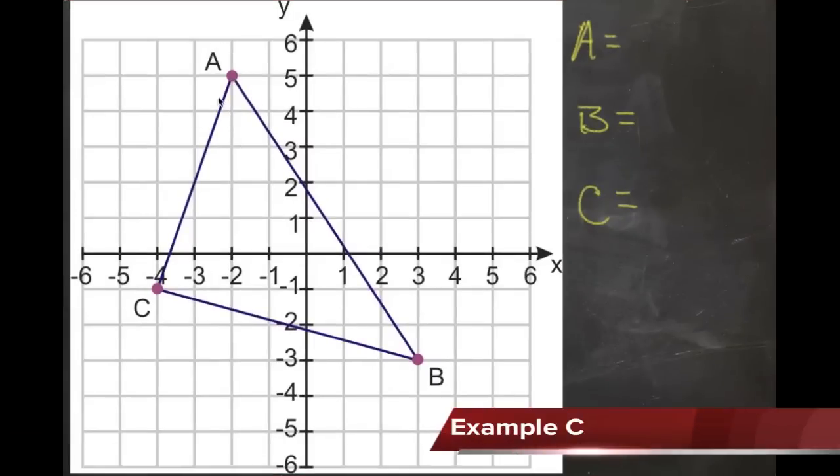In example C, we're defining the coordinates of three points. They happen to be in the shape of a triangle, and we're looking for the coordinates of the vertices. But really, it's exactly the same process we did with examples A and B. We're looking for the coordinates of point A first.